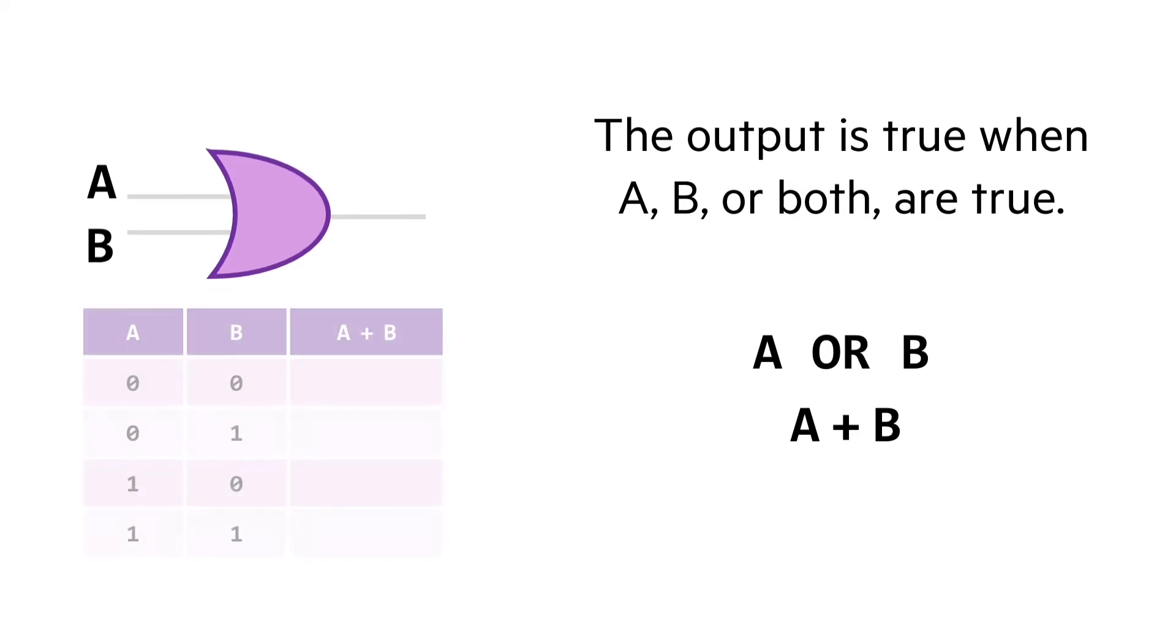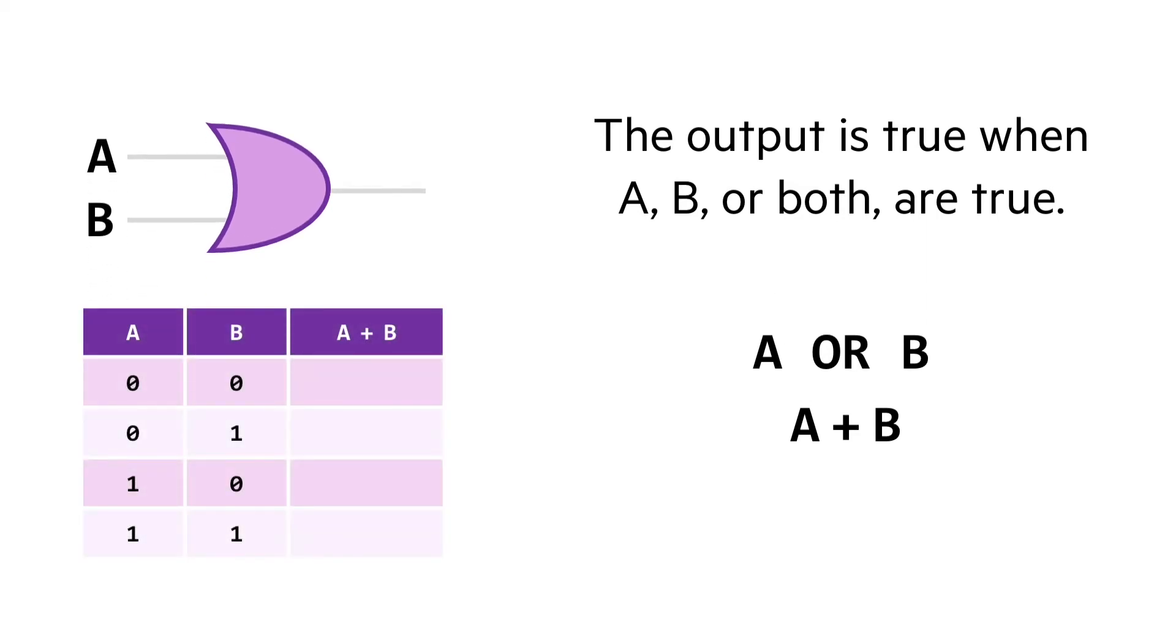Let's construct that truth table then. Same input states as the previous example, as we have the same amount of inputs, and we're only able to set the output to 1 if either A or B are 1 already. So, on the first line we get a 0 output, because both inputs are set to OFF. But it gets more exciting on our second line, where B is set to 1, so we get an output of 1. Happy days!